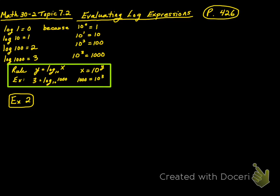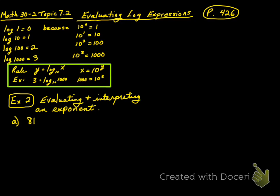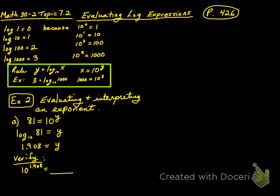In example 2, we have to evaluate and interpret an exponent. For part A, we have 81. We're going to say 81 is 10 to the power of y, so log base 10 of 81 equals y. We can say that y is going to be approximately 1.908 — we simply use our calculator. Log of 81 is 1.908. That means 10 to the power of 1.908 is going to equal 81.